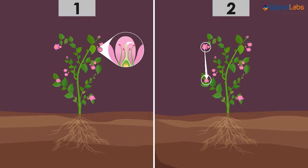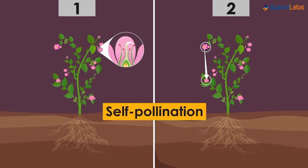This type, where the pollination occurs in the same flower or between different flowers of the same plant, is called self-pollination. It is the type that involves a single flower or the flowers of the same plant.